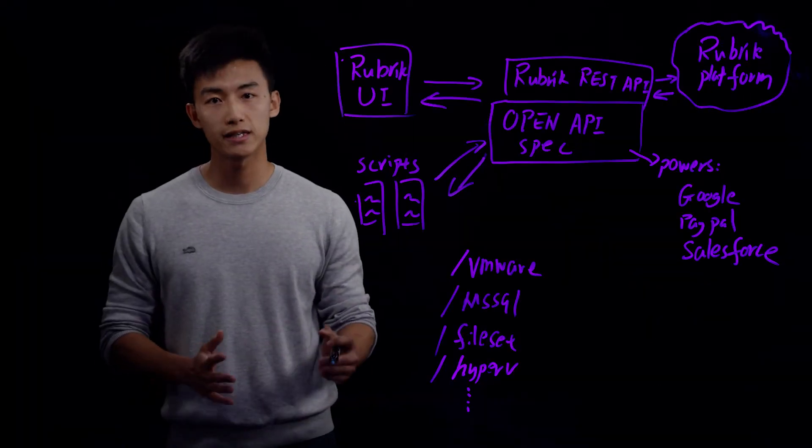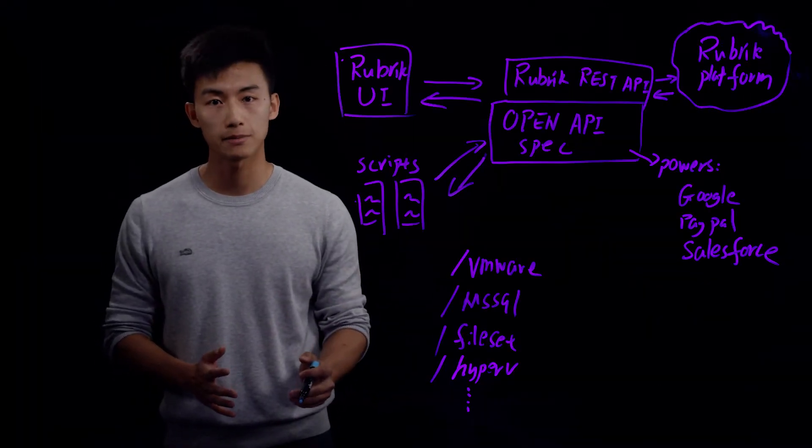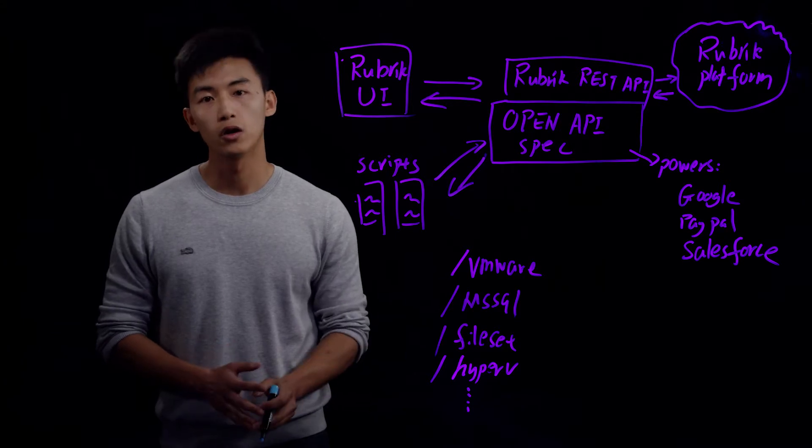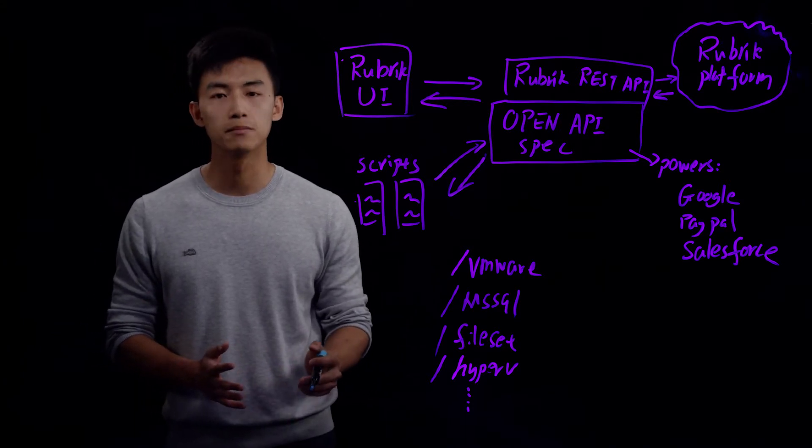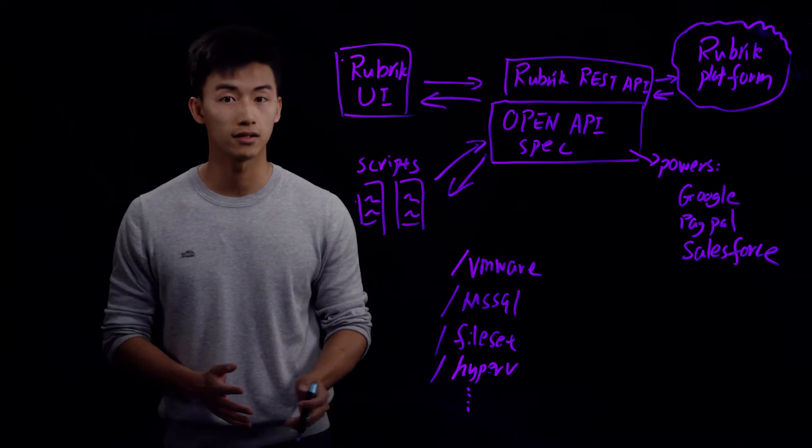The Rubric REST API is built on top of open API specification. The open API specification is the most widely adopted API spec in the industry.